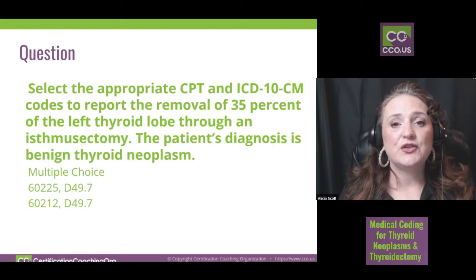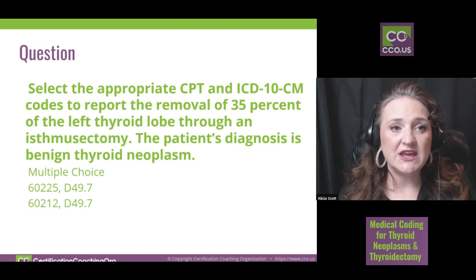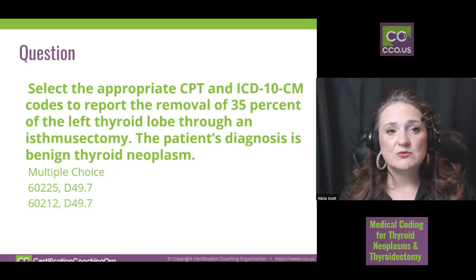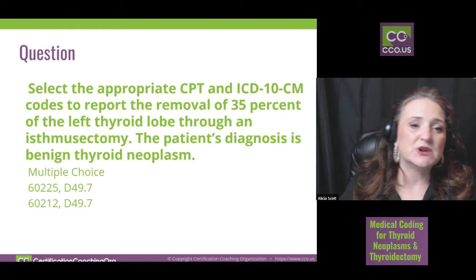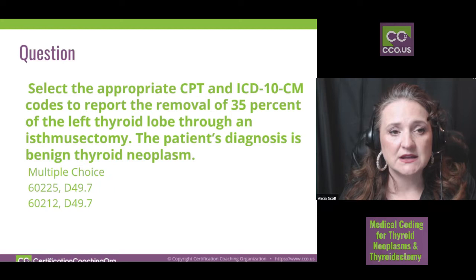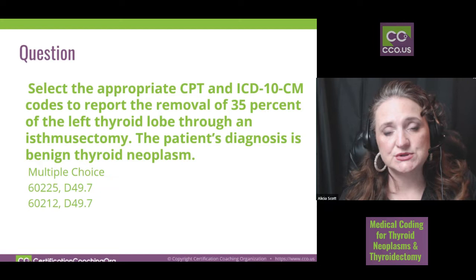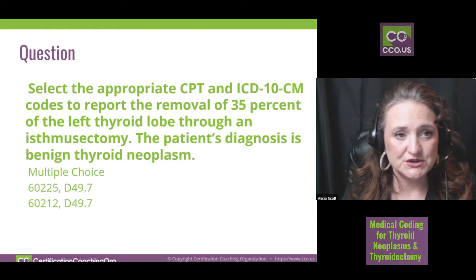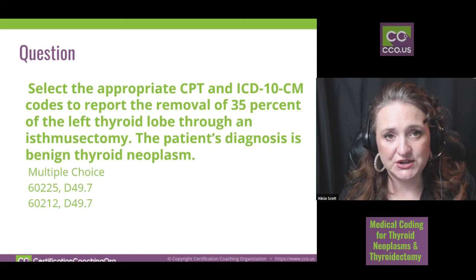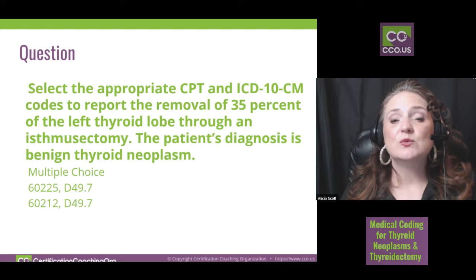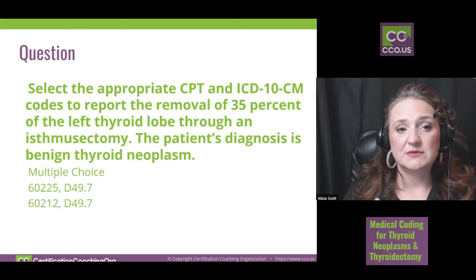The scenario is that they removed 35 percent of a left thyroid lobe via what's described as a mastectomy, and the diagnosis was a benign thyroid tumor or neoplasm. The student put in two codes on the multiple choice and wasn't sure which one to use. The first thing we should do when looking at this, as if we're taking a certification exam, is try to narrow it down.